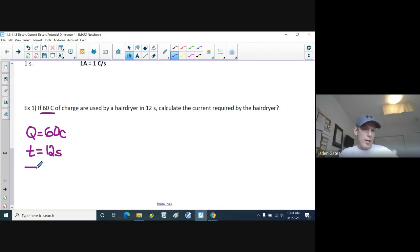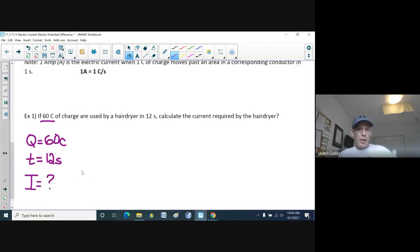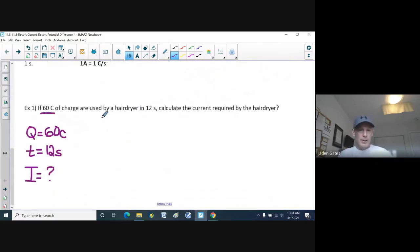And what we're looking for is the amount of current. So I'm just going to use my formula, I equals Q divided by T. So I have I is equal to 60 divided by 12. And sure enough, our current for this hairdryer, which takes 60 divided by 12, is five. And we are talking about amps. So this is a five amp hairdryer, which is quite a bit of charge, kind of powerful. But hairdryers are kind of powerful, believe it or not.